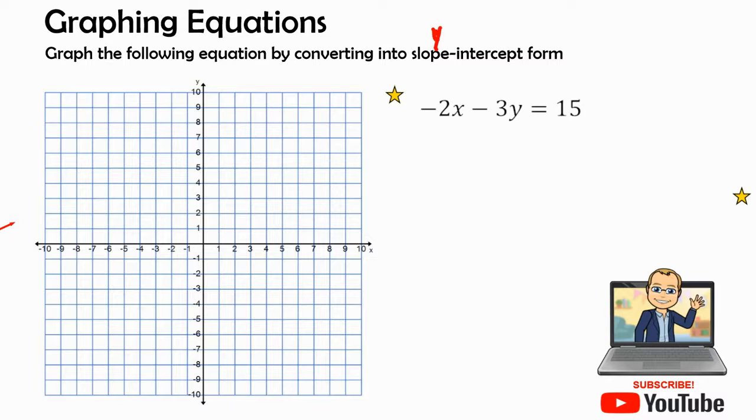And slope-intercept form, y equals the slope m and the intercept b. We want to convert this from standard form into the y equals mx plus b form.